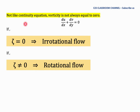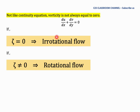One important thing: unlike the continuity equation, vorticity is not always equal to zero. In continuity, we must prove the equation equals zero; if not, something is wrong. However, for vorticity it can equal any number. If zeta equals zero, we call the flow irrotational flow — it does not rotate. If zeta is not equal to zero, we call it rotational flow.